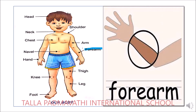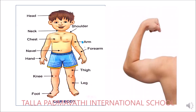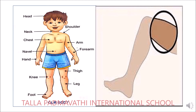Next is forearm. This area we are calling it as forearm. Now touch your forearm children. It comes for arm — where is your arm? This part is called your arm. Now touch your arm. Next it comes for thigh. Are you able to see the circle over here? That is called thigh. Here in this picture you have a thigh.